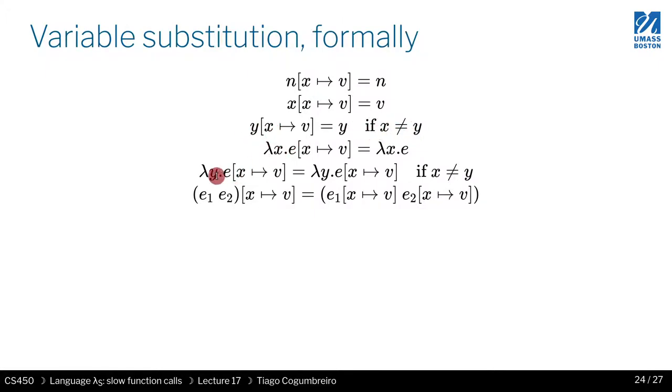So it's either a number or a variable where the variable matches the parameter or the two variables are distinct. Or you have a function declaration. And then there are two cases again. One where the parameter of the function declaration and the variable that you're finding match. And then you have another case where you have a function declaration, but the variable that you're finding is not the parameter in the variable declaration. So if they're different, you have another branch for that. And finally, the case where you have a function application.